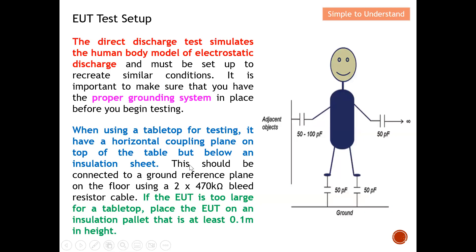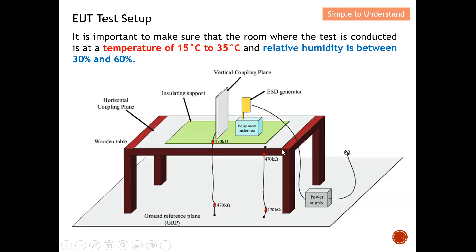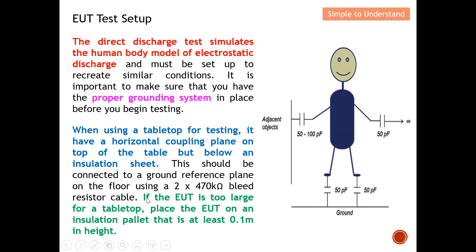The horizontal coupling plate should be connected to a ground reference plane on the floor using two 470 kΩ bleed resistor cables, as illustrated. If your EUT is too large to place on a table, you need to place it on an insulation pallet that is at least 0.1 meter in height before performing the test.